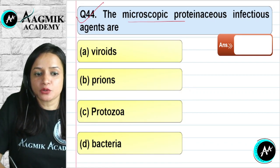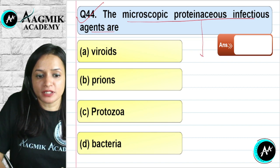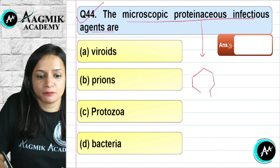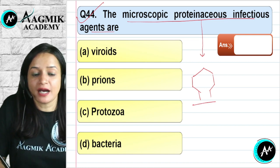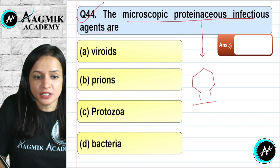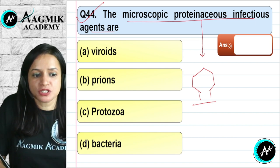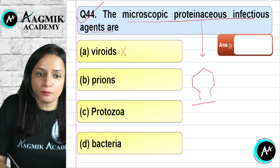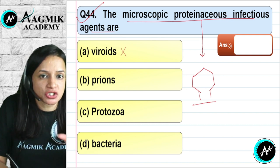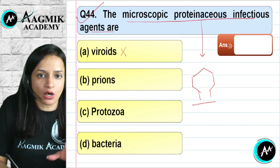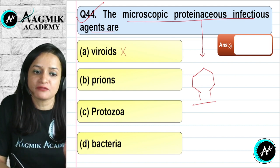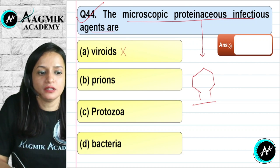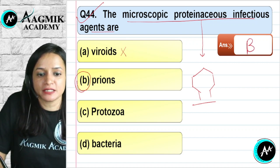Question number 44: What is the microscopic proteinaceous infectious agent? Viroids are without protein coat, so they are not the answer. Prions are the proteinaceous infectious agents — they have only a protein coat, no DNA or genetic material, and are highly infectious. Protozoa and bacteria are not proteinaceous infectious agents in this sense. The correct option is B — Prions.